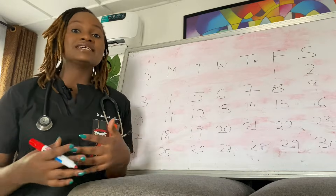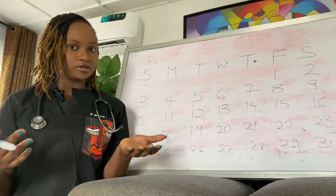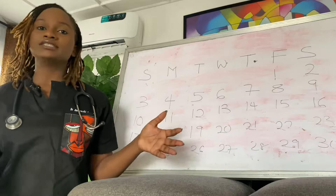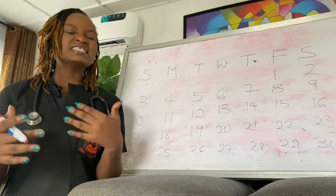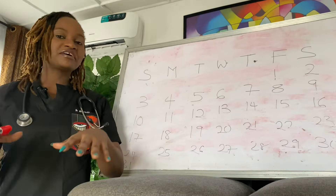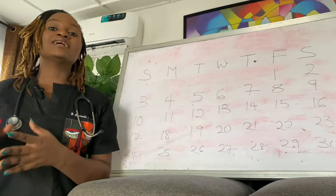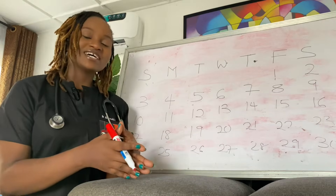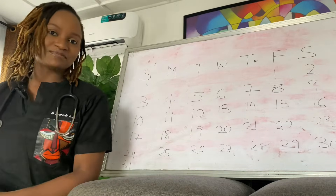Cycle length is not the number of days that you see your period — so it's not three days, four days, or five days. Cycle length is the number of days in between your period, counting from the very first day you see your period to the day before you see your next period.